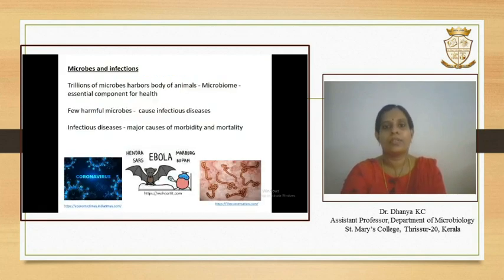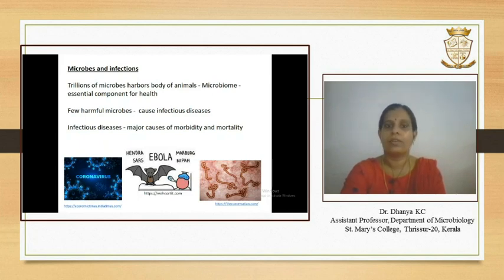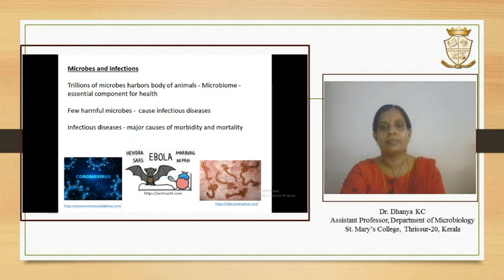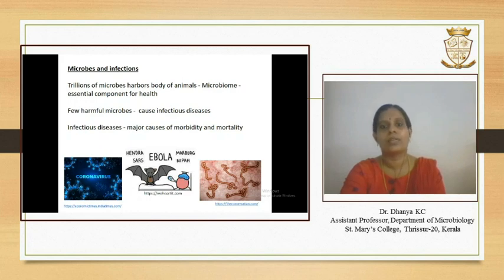Coming to microbes and infections: there are trillions of microorganisms such as bacteria, viruses, fungi, etc. that normally harbor the body of animals. These microbes collectively are called the microbiome or microbiota. It is an essential component of immunity and thereby health, and it influences all physiology and metabolic aspects of the particular host organism.